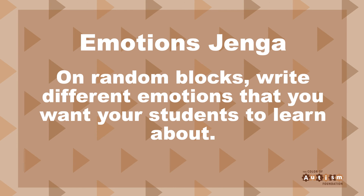These prompts can be anything from questions about bullying to how different situations make them feel. Next, we can play Emotions Jenga. You simply need a Jenga set and a marker — on random blocks, write different emotions that you want your child to learn about. This could include emotions such as anger, happiness, worry, jealousy, and so much more. The child will pull an Emotion Jenga block out, then tell you what the emotion means and what it makes them feel like. For example, if they pulled the anger block, they would have to describe what anger means and express what makes them angry.